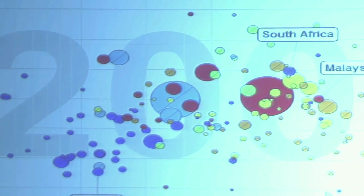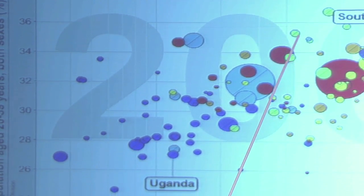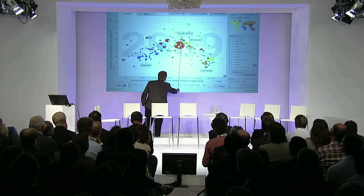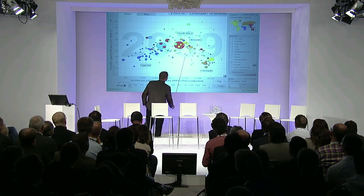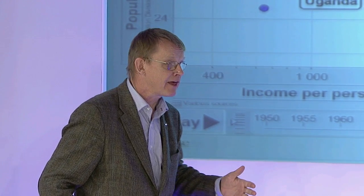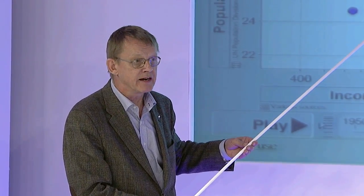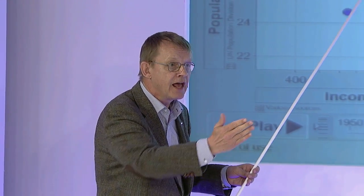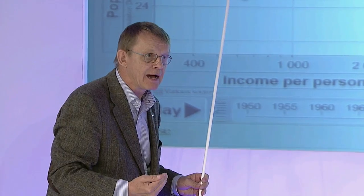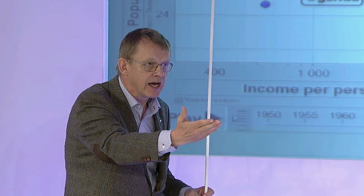When you look at it today, it seems like South Africa, Malaysia, and Denmark are much more similar, because they have almost the same number of zeros on the paycheck — on the average paycheck. But there are different types of paychecks in South Africa. Whereas Uganda is quite low down here.